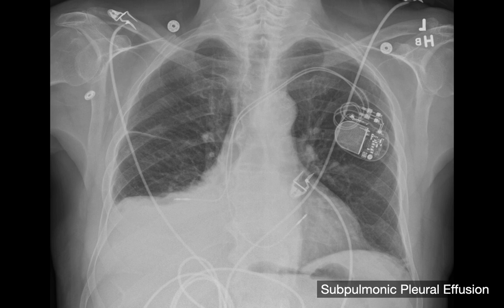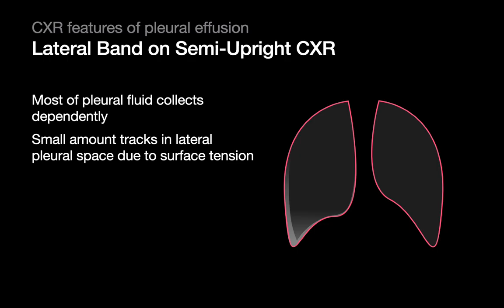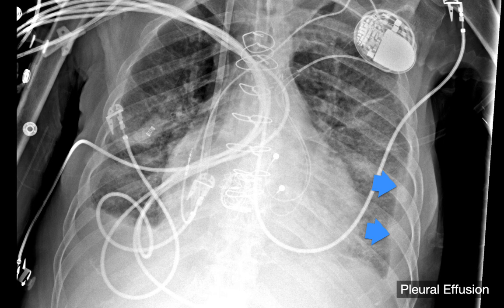Here's an example of a subpulmonic pleural effusion that looks like just an elevated right hemidiaphragm, but all that opacity inferior to the right lung is actually pleural fluid, likely a hemothorax in the setting of a malpositioned cardiac conduction lead. Another way pleural effusions may manifest is as a lateral pleural band — a layer of fluid between the rib cage and the lateral margin of the lung. On portable chest x-rays, you may not always see blunting of the costophrenic angle; the lateral pleural band may be the next feature you see.